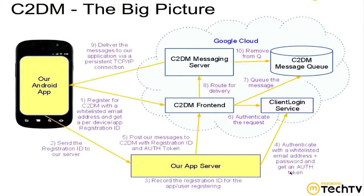The notification goes to a specific device — it's point-to-point. You can't send a notification to everyone at once. When you send your notification you target a specific registration ID, which targets a specific application on a specific device. Our app does an HTTP GET on the server to get the registration email and then uses it to register for C2DM so it's configurable. You could have multiple registrations with Google — each app with a different registration email — to work around quota limits, though Google hasn't been very clear on how they enforce those limits.